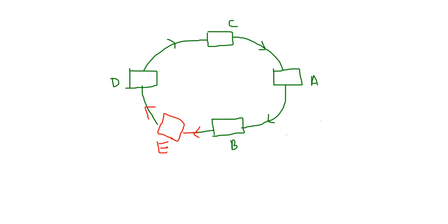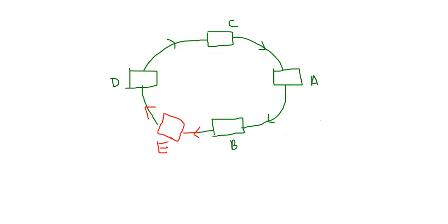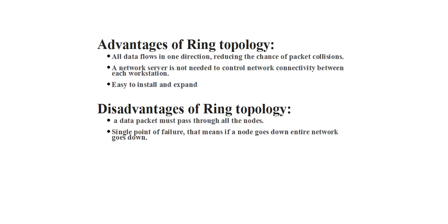Second disadvantage: single point of failure. If one node goes down, the entire network goes down. For example, if node A goes down, then B can send a message to E but E cannot respond back to B, so the entire network fails. This is another major disadvantage of ring topology.